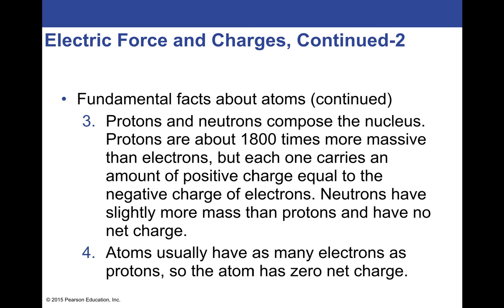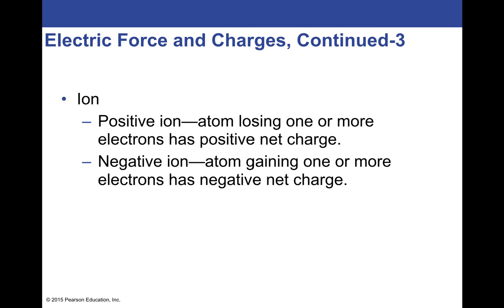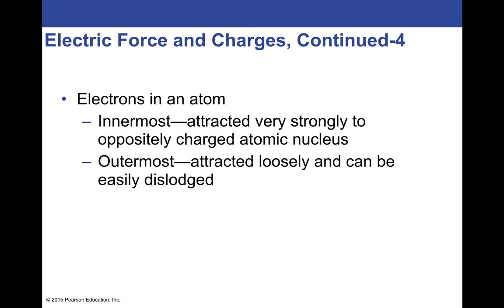The neutrality of an atom: if an atom has the same number of electrons and protons, that's the most stable state because the charges balance out and you have zero net charge. If you remove some electrons, there'll be too many protons and the atom will have a net positive charge — we call these ions. A negative ion has too many electrons so the negative charges overpower the positive ones.